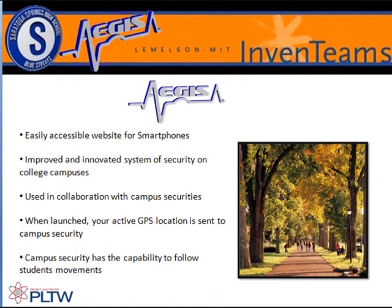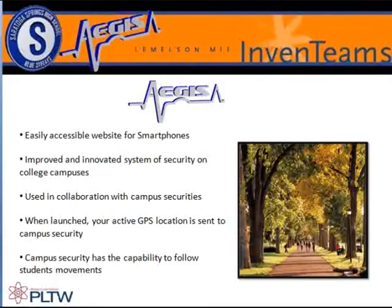Aegis is an application that a student can access via their smartphone. It consists of two different components: a website used by campus security and the phone application that would send information to the webpage. When new students are admitted to a school, the school gives them each unique identification codes that these students can use to edit their personal information on the website. When the students use their phones to click the alert button, the phone sends a distress signal to campus security in the form of the phone's GPS location, as well as the personal information that they entered in their profile. Campus security can view these signals and information under a password-protected, web-based program.